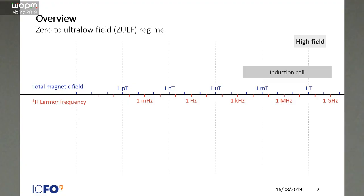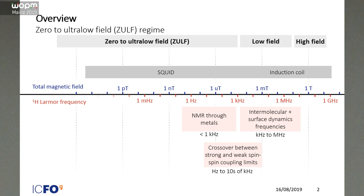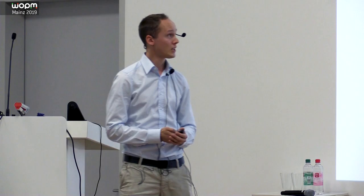For example, that starts with intermolecular surface dynamics. That frequency usually starts at a few megahertz and goes down to kilohertz, as well as the crossover between the strong and weak coupling, as well as low frequencies enable you to do nuclear magnetic resonance in metals, which is not possible with very high frequencies because the penetration depth of metals is usually quite low.